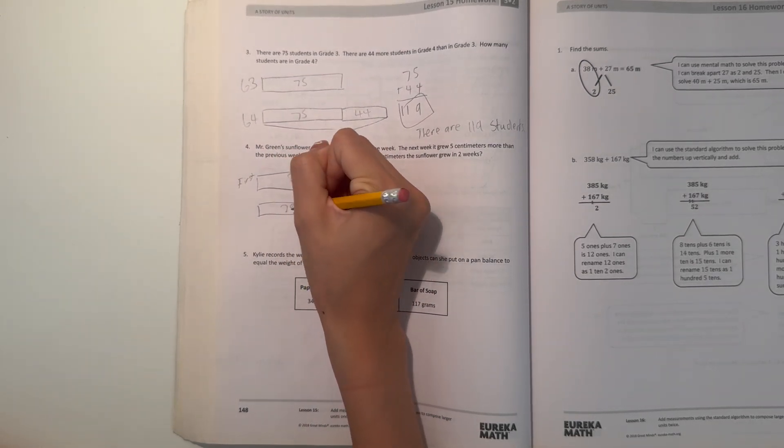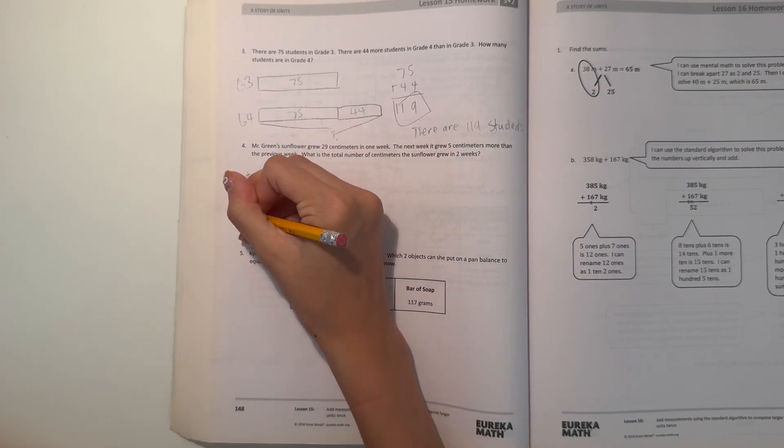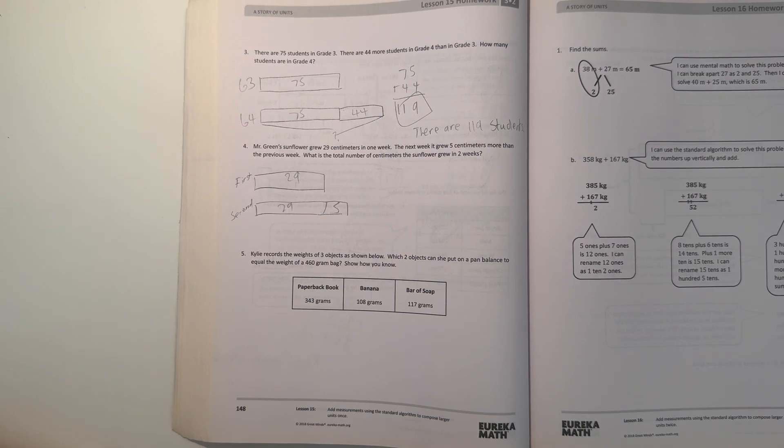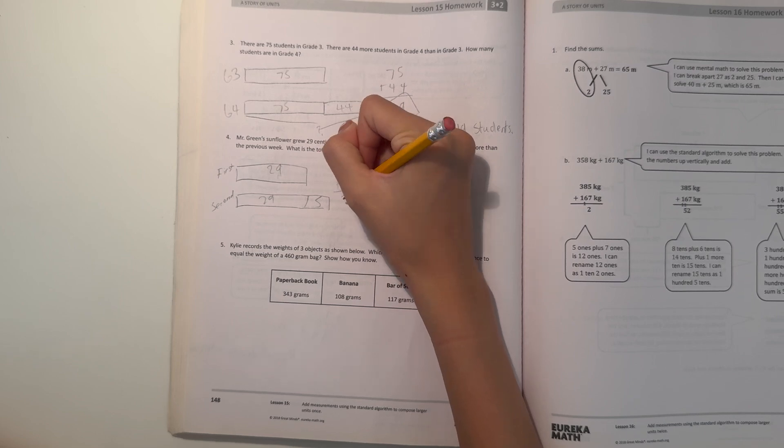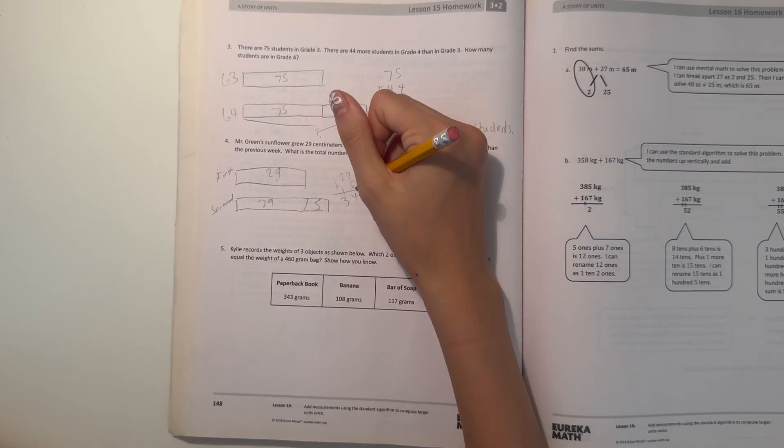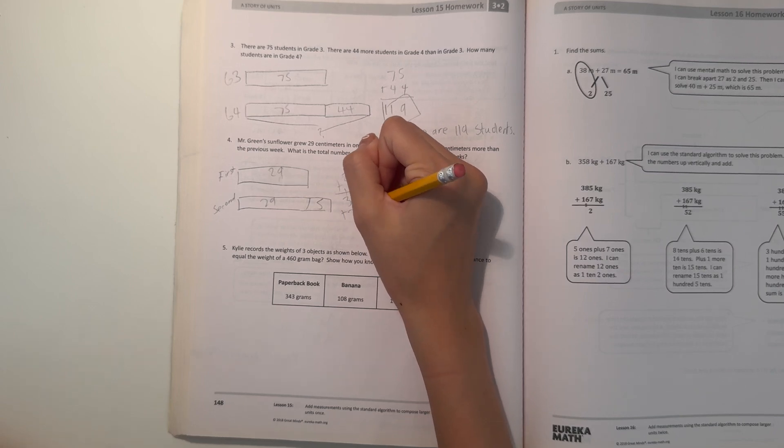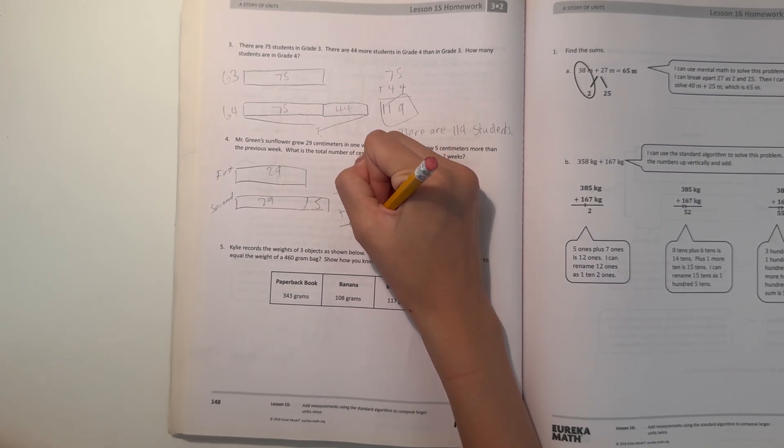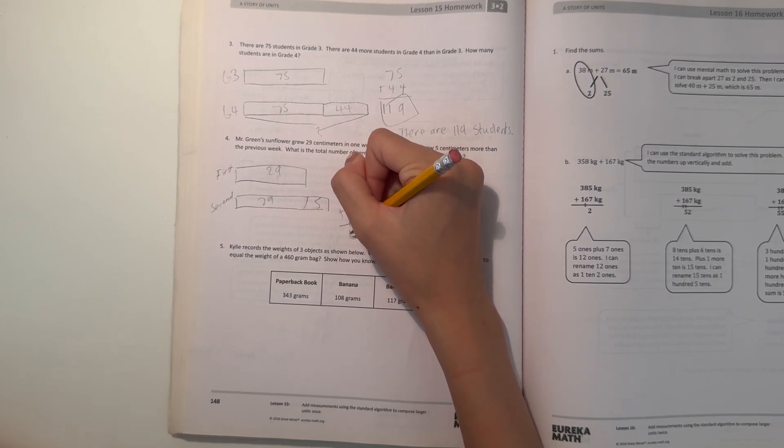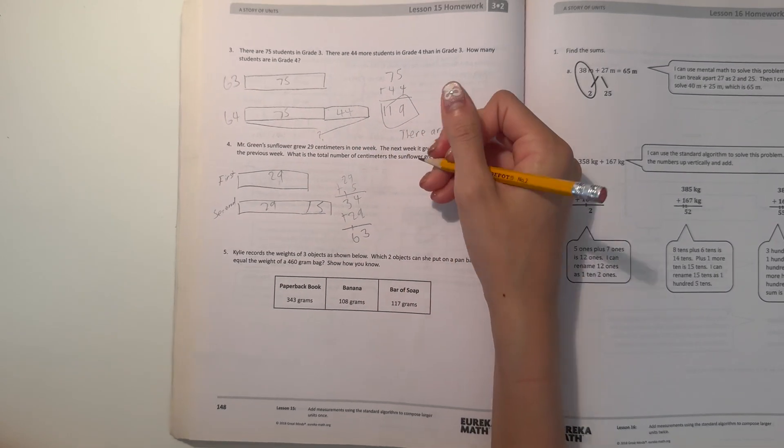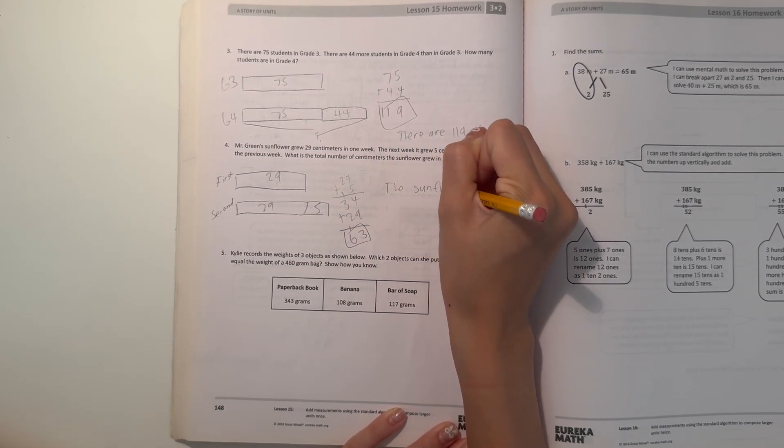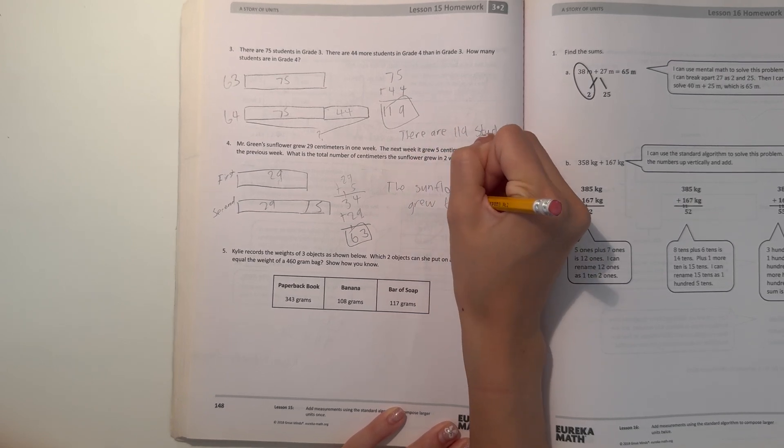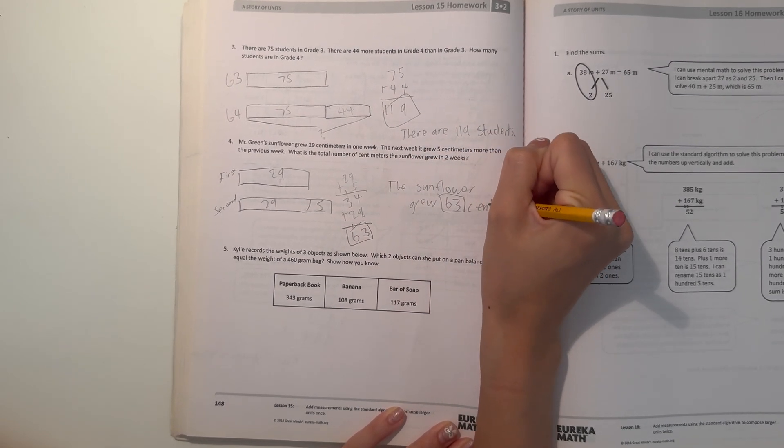So 29 plus 5: 9 plus 5 is 14, and 2 plus 1 is 3, so that's 34 in the second week. Now 34 plus 29, adding the two weeks together. 4 plus 9 is 13, 3 plus 2 is 5, plus 1 is 6. So 34 plus 29 is 63. That means the sunflower grew 63 centimeters.